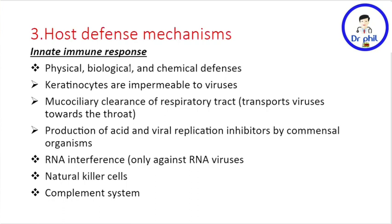For the innate immune system, physical, biological, and chemical defense mechanisms play a very significant role. Examples include keratinocytes — keratin-producing cells found on our skin that are impermeable to viruses. There is also mucociliary clearance of the respiratory tract, also known as the mucociliary escalator, where cilia beat upwards expelling the virus and transporting it back to the throat for swallowing, which only works for acid-labile viruses.